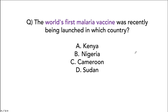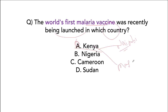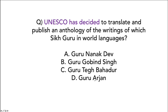The world's first malaria vaccine was recently launched in Kenya. Kenya's capital is Nairobi, and in Kenya we also have the Masai Mara National Park. This vaccine could be a game changer for malaria elimination. UNESCO has decided to translate and publish an anthology — a collection of writings — of which Sikh Guru in world languages?